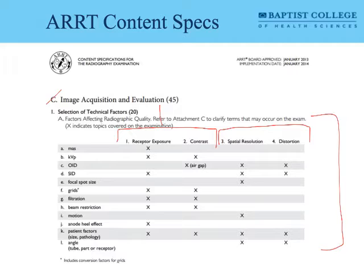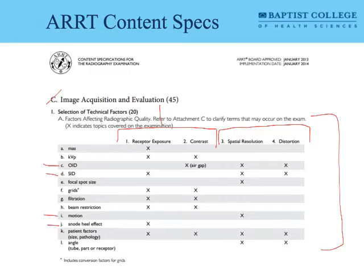The main distinction between technical and geometric factors has to do with spatial resolution and distortion. Looking down the columns, we see factors that are geometrical in nature — having to do with distances, patient motion, or the anode heel effect. Patient factors are a notable exception, going across the board impacting image quality. Another outlier is the air gap, which relates to both geometrical and technical imaging considerations.